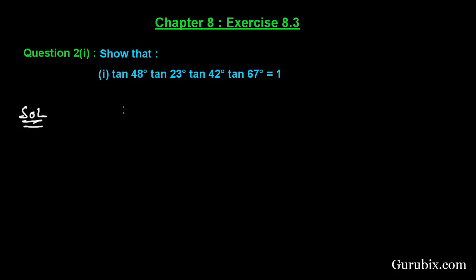We shall start with the left hand side. The left hand side is tan 48°, tan 23°, tan 42°, and tan 67°. You can easily observe that if we add 48 with 42 then we get 90°. This means we shall change one of these two values. Here we have 23° and 67°. If we add 23 with 67 then we have 90°, meaning we shall change one of these two.